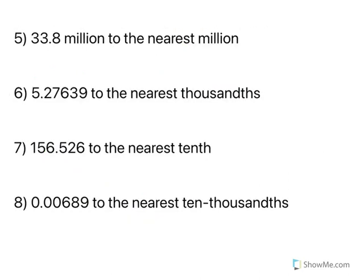33.8 million to the nearest million. Now, when you have 33.8 million, the 33 are the millions, and the 8 is in the next section, which would be in the thousands. So if we're looking at nearest million, that means I'm looking at the 3. The 8 tells me to round up. So rounded to the nearest million would be 34 million.